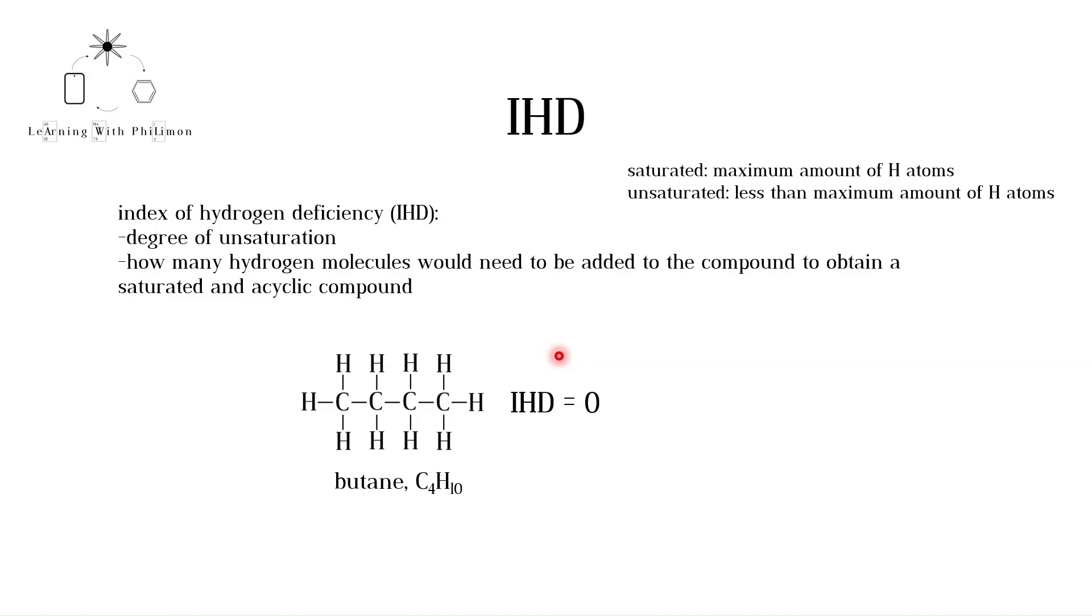Compounds that contain one double bond have an IHD of one. For example, ethene has an IHD of one. To saturate ethene with hydrogen atoms, you would need to add one hydrogen molecule. This would entail breaking the double bond and each carbon bonding to one hydrogen atom. This would form the saturated molecule ethane. Notice that ethene and ethane differ only by two hydrogen atoms.